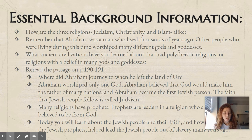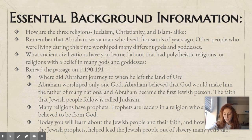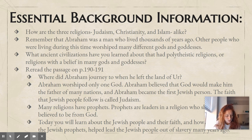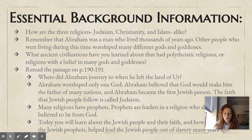Essential background information: How are the three religions — Judaism, Christianity, and Islam — alike? They all have a holy place in Jerusalem, and they're all monotheistic, meaning believing in one God. Remember that Abraham was a man who lived thousands of years ago. Other people who were living during this time worshipped many different gods and goddesses, so Abraham was believing differently than those other people.